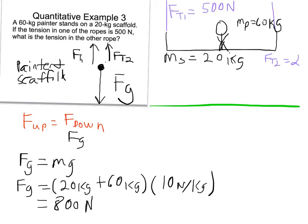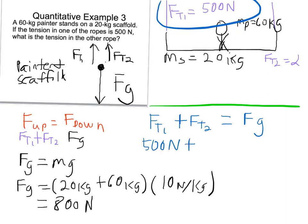My up forces are FT1 and FT2. That means that, different part of the problem, switching to a different color. All the up forces, FT1 plus FT2, have to equal Fg. Which I just found out is 800 newtons. And FT1, we already know from up here, is 500 newtons. So let's put that in. 500 newtons plus FT2 equals 800 newtons.